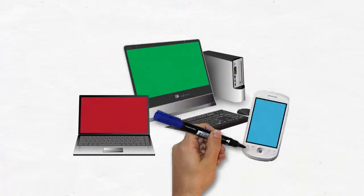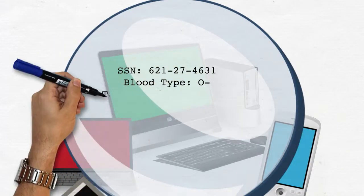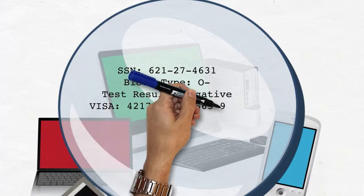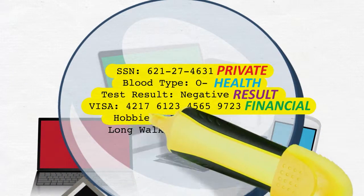It scans and discovers data on your network and devices which contain sensitive information such as social security numbers, health information, test results, credit cards, and so forth. It will automatically classify the data it finds with an appropriate security level.